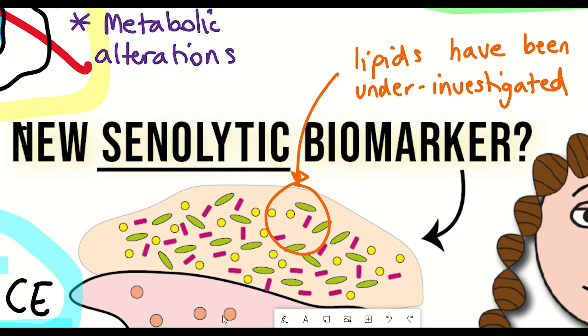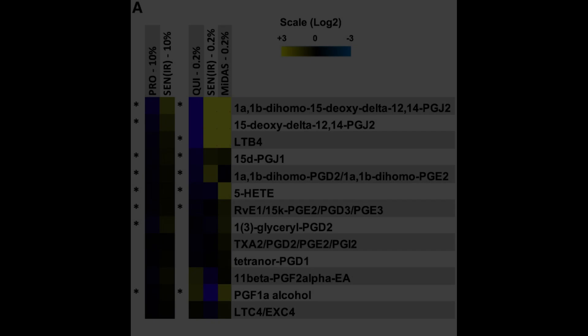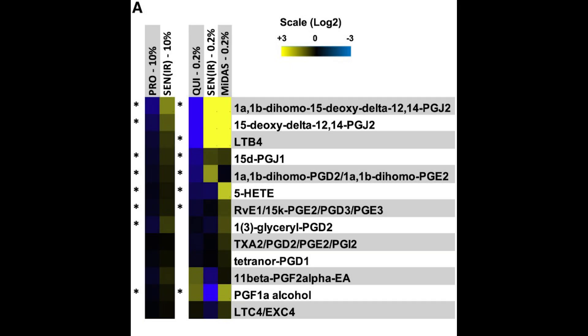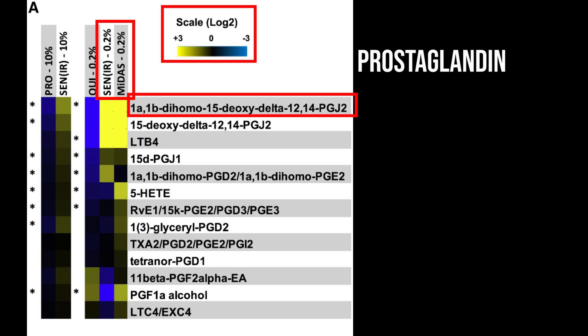So the first thing they did in this study is look at what lipids accumulate inside cells that have become senescent. And what they found is that certain subsets of lipids significantly increased or decreased upon senescence. Notably, the most highly elevated senescence-associated lipid was a prostaglandin known as 1A1B-dihomo-15-deoxy-prostaglandin-J2. You'll be glad to know that we can somewhat simplify that to dihomo-15-D-PG-J2. Although it's still a bit of a mouthful.